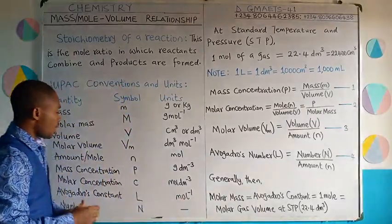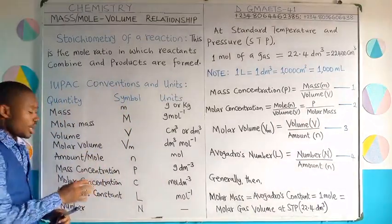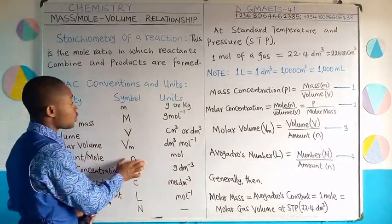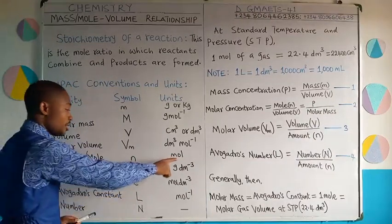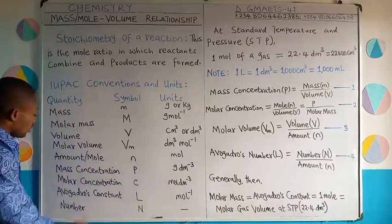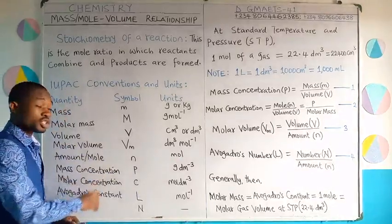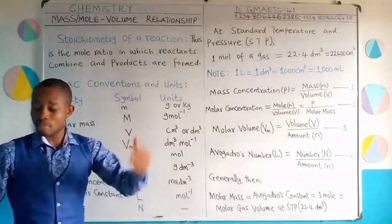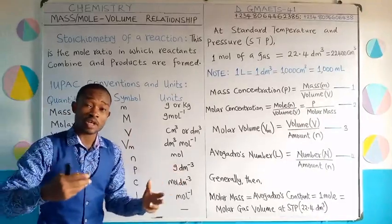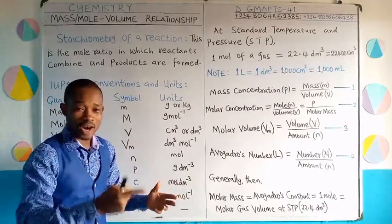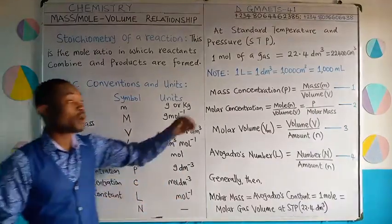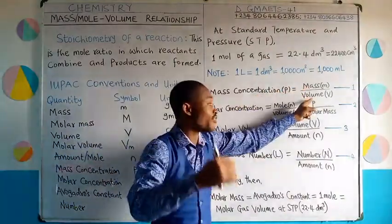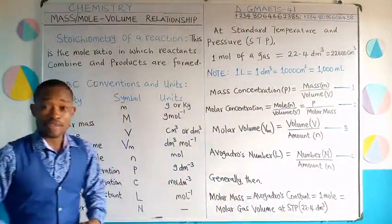The next quantity is amount, also known as mole. We use the symbol n (small letter n) for it, and the unit is mole. Now let us talk about mass concentration. We use the symbol ρ (rho). The unit is grams per dm³. Since gram is the unit of mass and dm³ is the unit of volume, mass concentration has the formula: mass divided by volume.